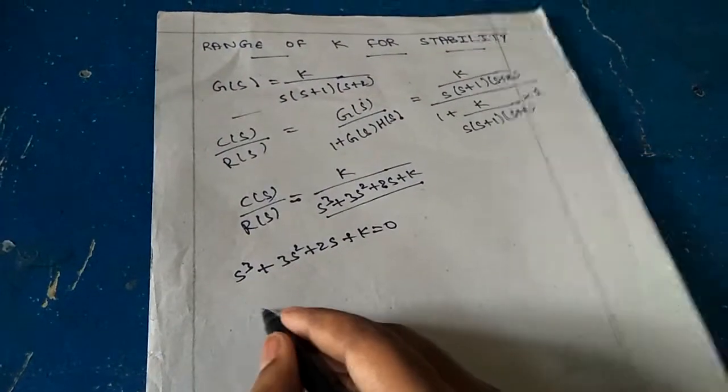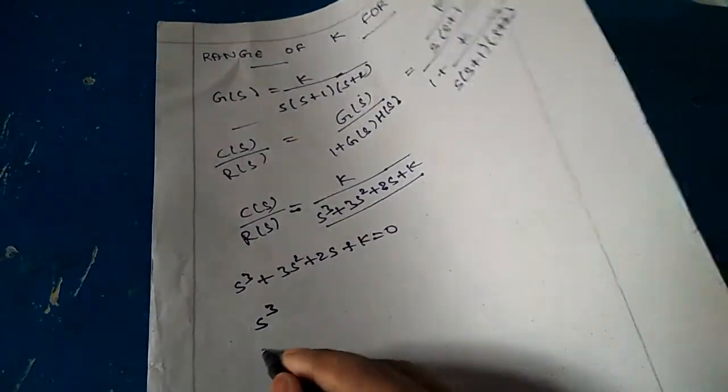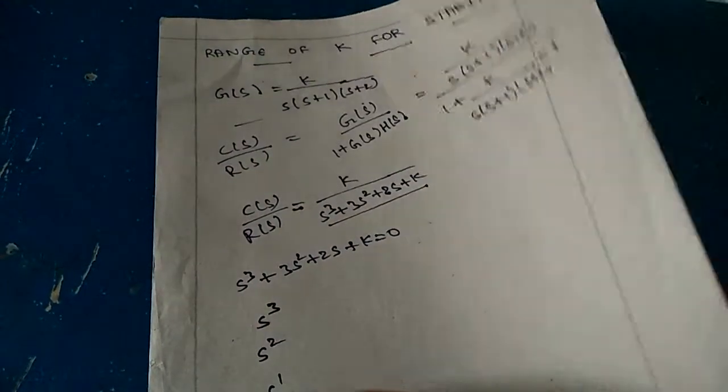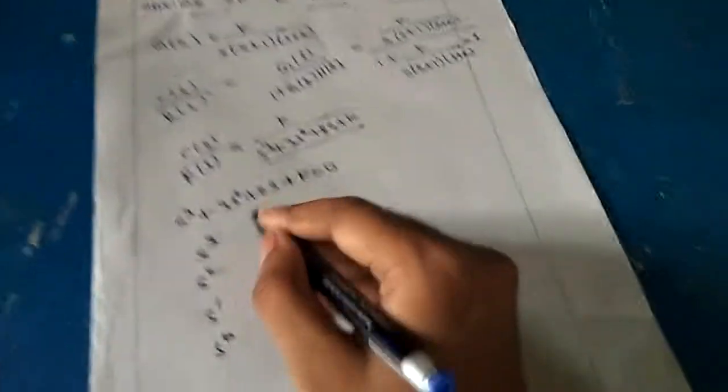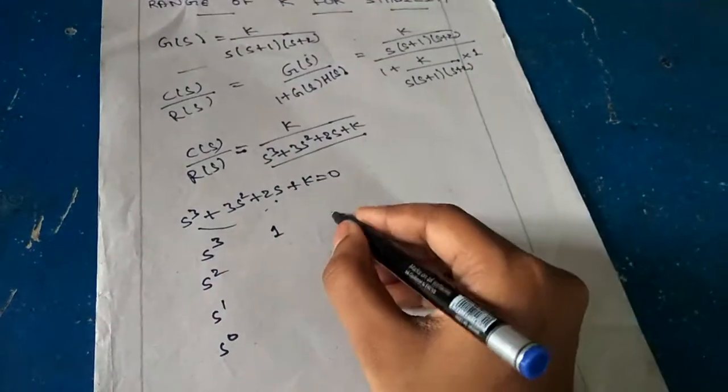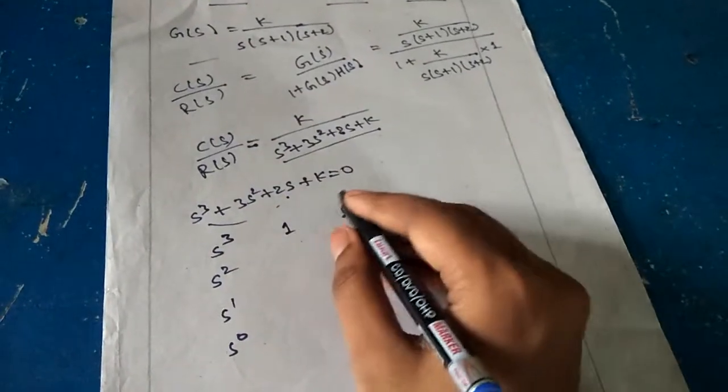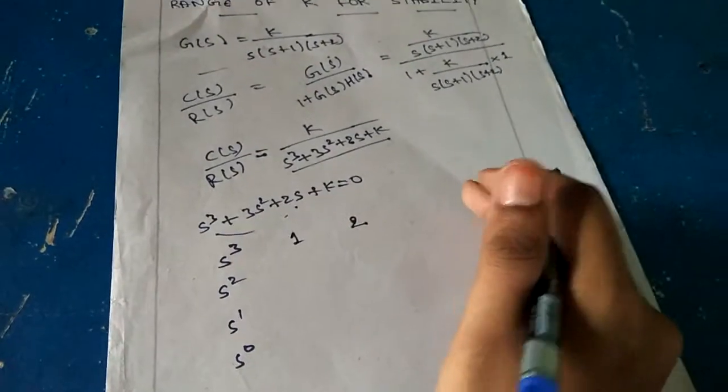Now do the RH criteria method. First is s³, s², s¹, s⁰. First one is s³: coefficient is 1, alternate term is s coefficient 2. After that nothing is there, so we should not take anything.